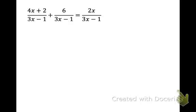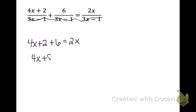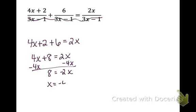On this first problem, again I have common denominators, so I'm just going to set my numerators equal. So I have 4x plus 2 plus 6 equals 2x. I can forget about the denominators because they're all the same. Then I get 4x plus 8 equals 2x. Subtract the 4x over, and divide by negative 2, I get x equals negative 4.